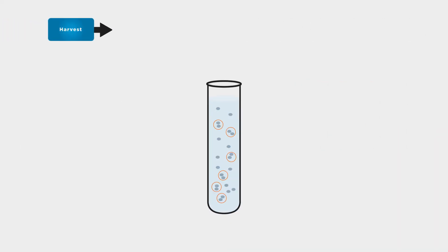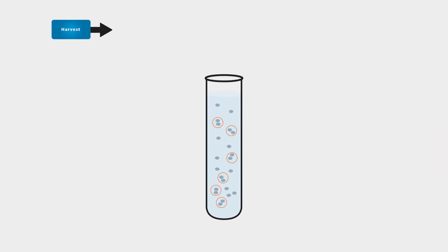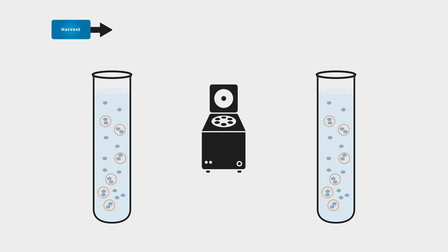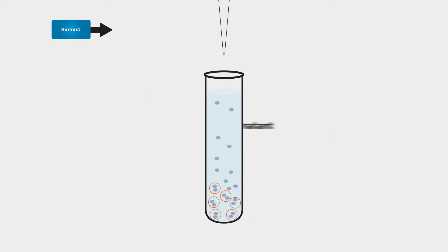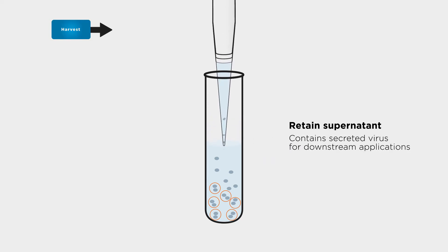Following transformation and cellular viral amplification, cells are subjected to a low-force centrifugation step to separate soluble virus from cells containing virus. Remember to retain the supernatant as well, which contains secreted virus that can be purified for downstream applications.